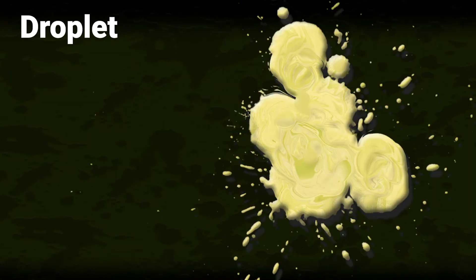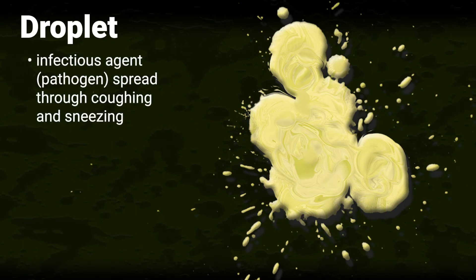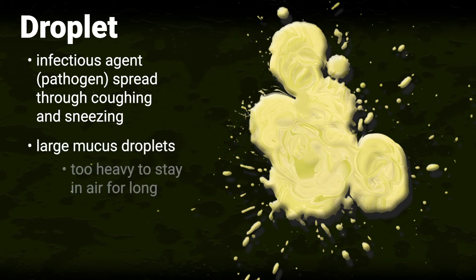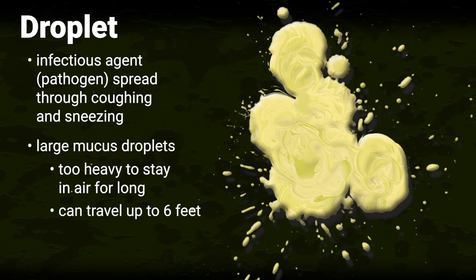Droplet. Droplets are mucus secretions that are sent into the air by coughing or sneezing. The large droplets are too heavy to stay suspended in the air for a long time — they can travel up to six feet, then drop.